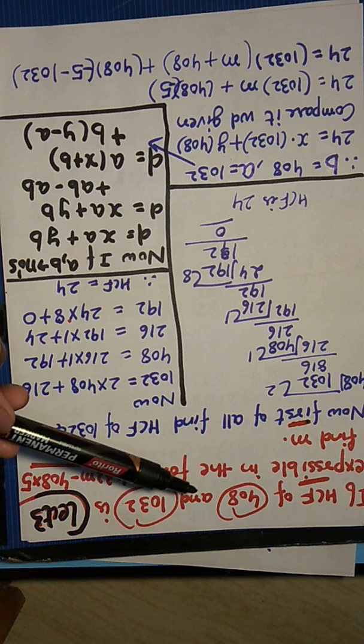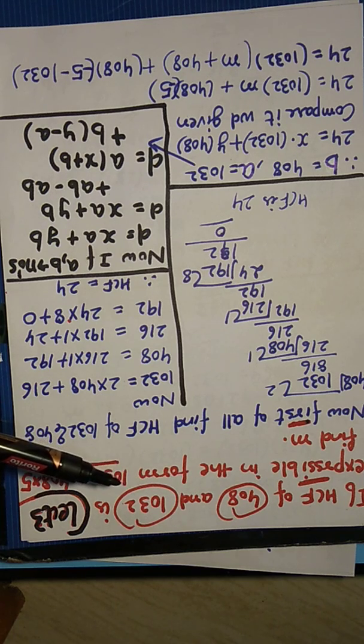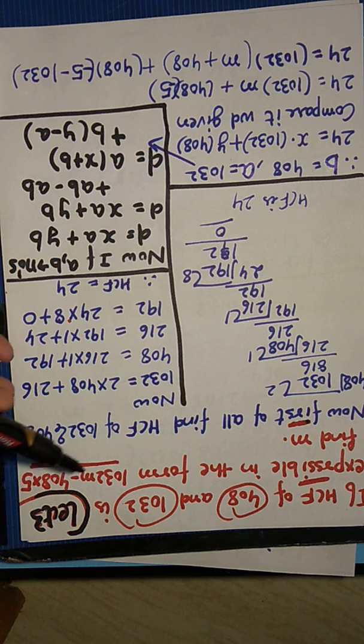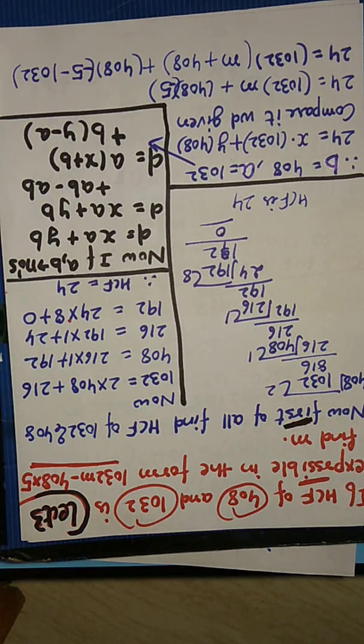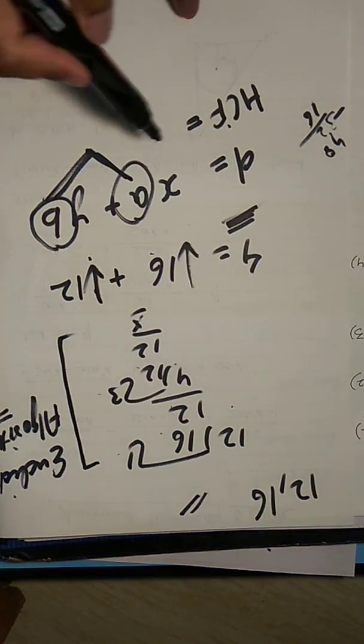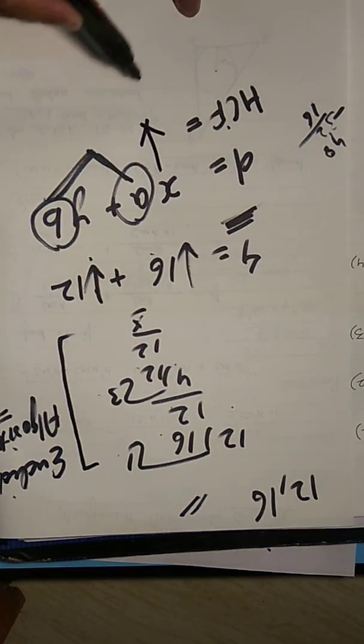If HCF of 408 and 1032 is expressed in the form 1032M minus 408 into 5, what is the value of M? Right? If I compare the statement with the statement, then what do we have to find?